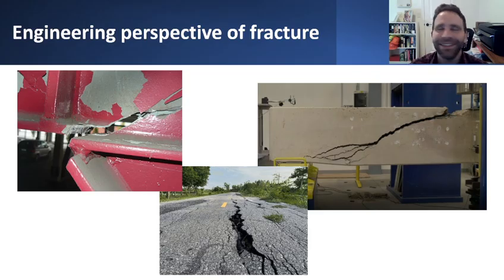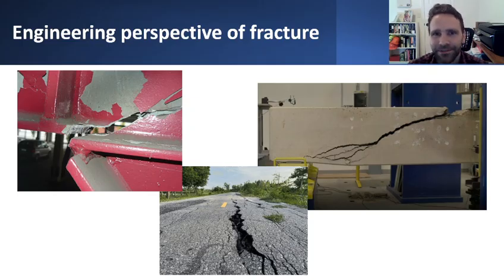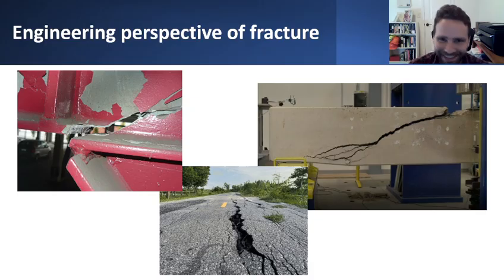Why do we care about fracture from an engineering point of view? From a civil engineering perspective, we care because we don't want our engineered structures to break or split apart. This applies to all kinds of materials — it happens to steel even though we mostly design steel structures to avoid plasticity. It's still possible for steel structures to undergo fracture, so we have to worry about it.